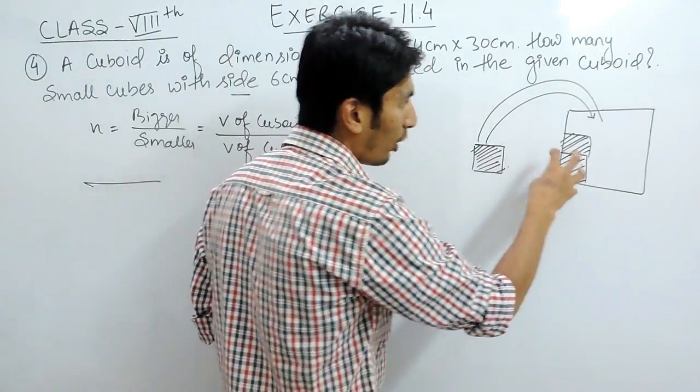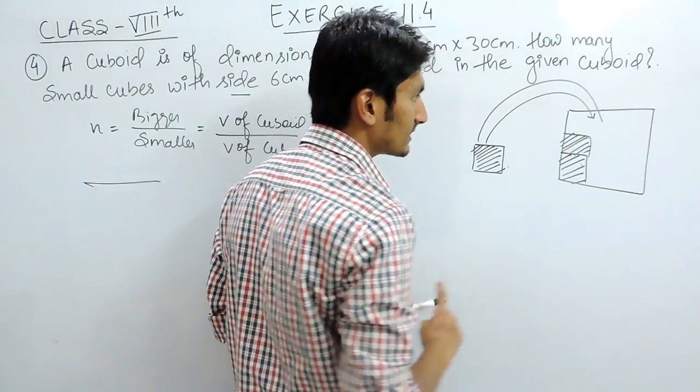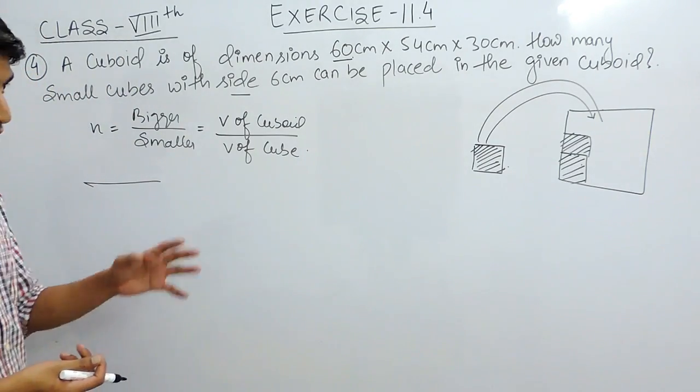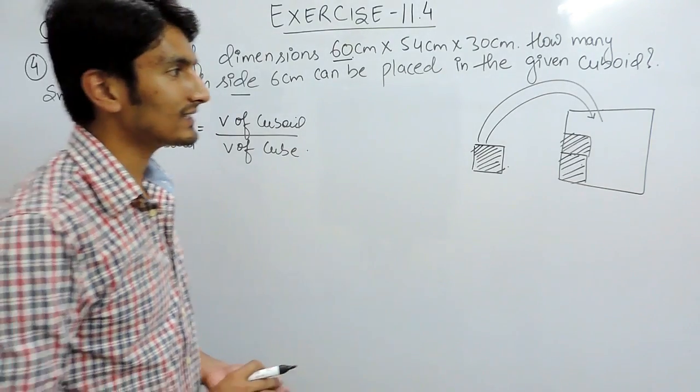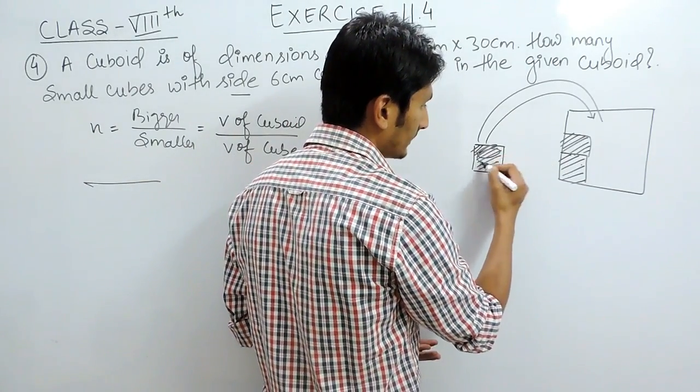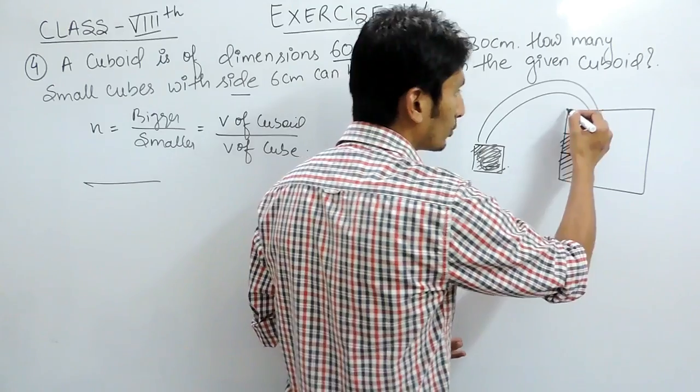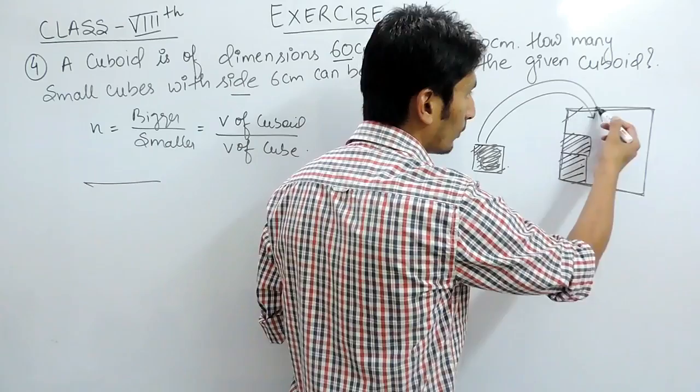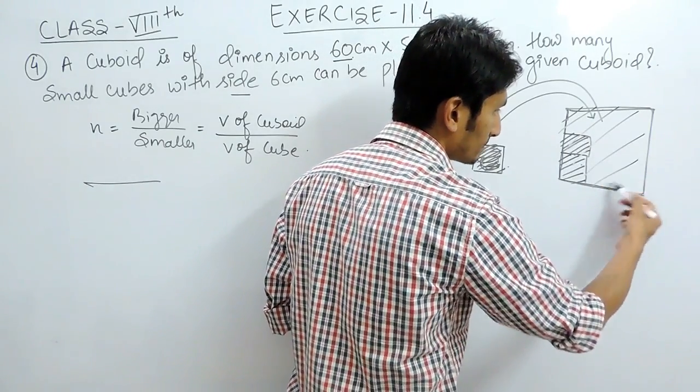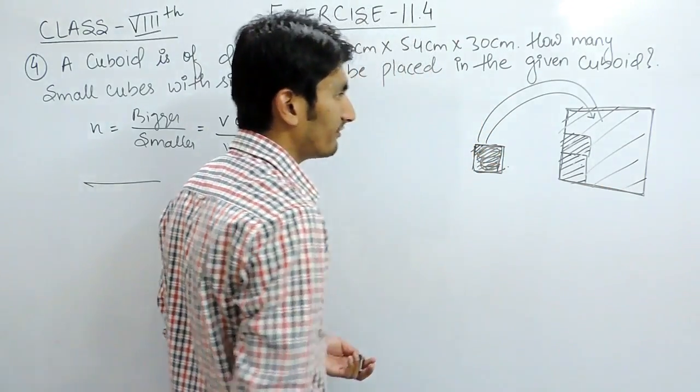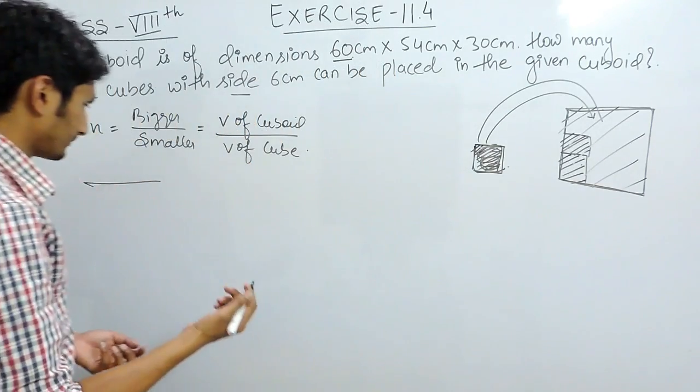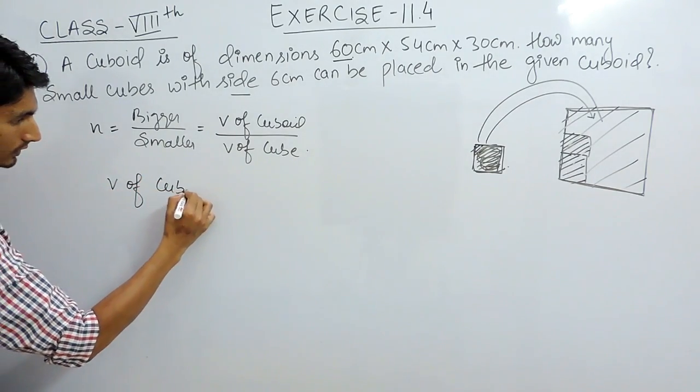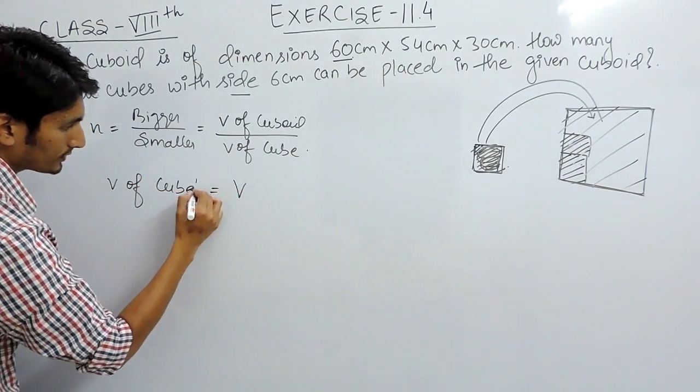So you have to find how many times you have to do this so that the tanker will become full. Here one thing is clear: the volume of these small cubes should be equal to the volume of this cuboid, or the water filled in this bigger cuboid must be equal to the water filled with these small cubes.